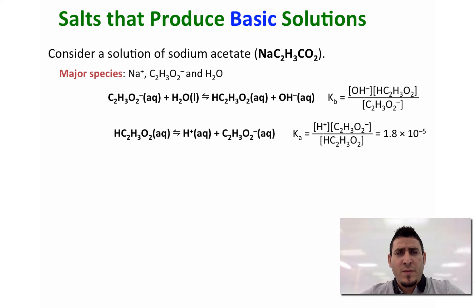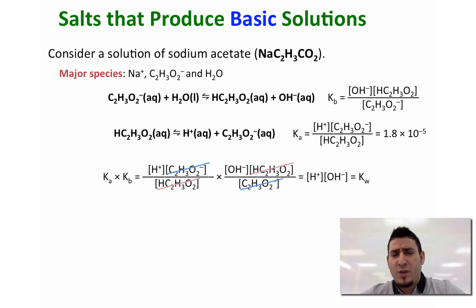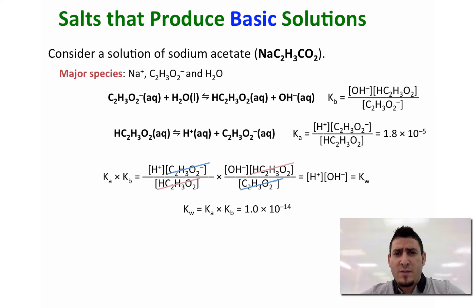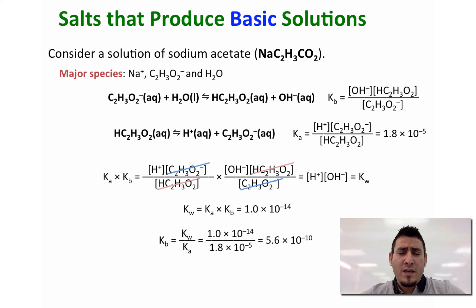Let's look up the Kb value of acetate. If we multiply Ka and Kb and replace them by their expressions, we can see that the concentration of acetate will cancel out and the concentration of acetic acid will cancel out. So the product of Ka and Kb is equal to the product of the concentrations of H+ and OH⁻, which is equal to Kw — the water dissociation constant, equal to 1.0 × 10⁻¹⁴. So Kw = Ka × Kb. Since I have the value of Ka, I can determine the value of Kb by Kw divided by Ka. The Kb in this case is equal to 5.6 × 10⁻¹⁰.